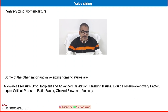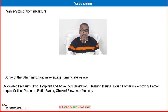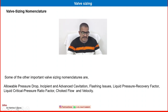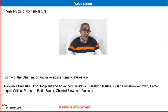Other important valve sizing nomenclatures — which can be found in the valve handbook — include allowable pressure drop, incipient and advanced cavitation, flashing issues, liquid pressure recovery factor, liquid critical pressure ratio factor, choked flow and velocity, among others. These factors also affect valve sizing criteria.